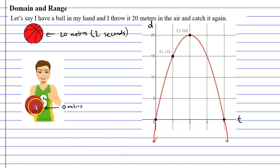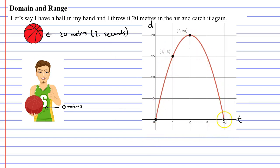The ball started in my hand — it started at 0. After 4 seconds I caught the ball, so it never went below my hand. These arrows are not needed. When we only keep a section of the graph and get rid of other parts, we call this restricting the domain of the graph.